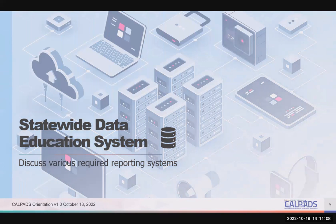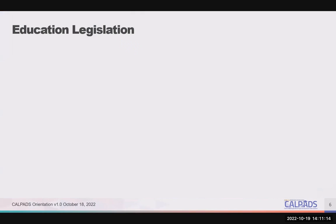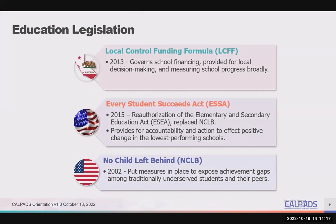Let's begin with reviewing our statewide education data systems. State and federal legislation specify what data are required to be reported, the timelines for reporting, and how those data are used. Some of the key acts are the Local Control Funding Formula, or LCFF, enacted in 2013 as part of the state budget. It revamped the way schools are financed, provided for local decision-making, and required the development of an accountability system to measure school progress using multiple factors.